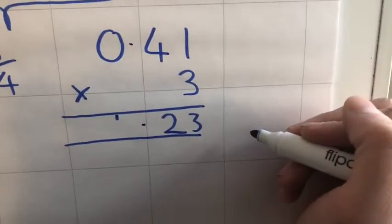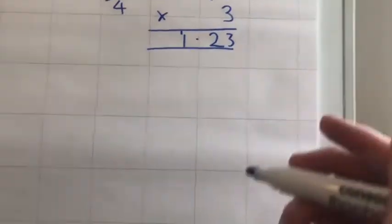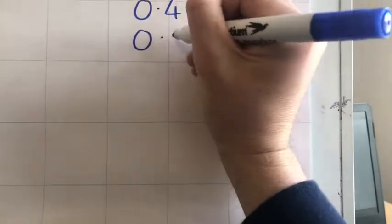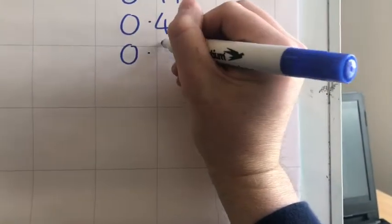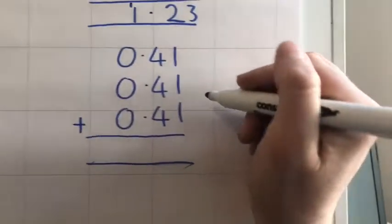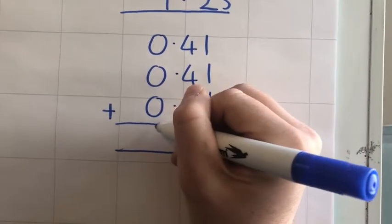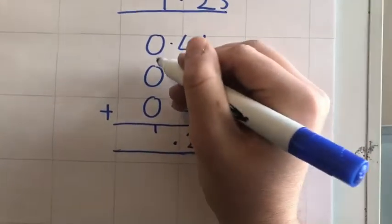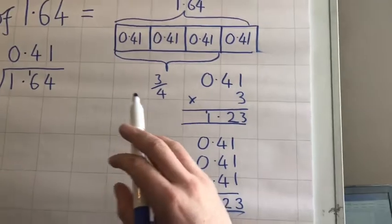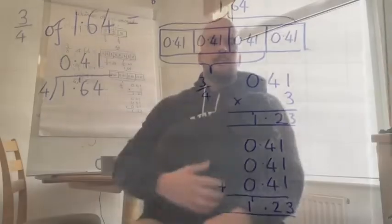Or I could do column addition: 0.41, 0.41, 0.41. So one add one add one is three, four add four add four is twelve. Zero, zero, zero. So three quarters of 1.64 is 1.23. So I hope that helps everyone today.